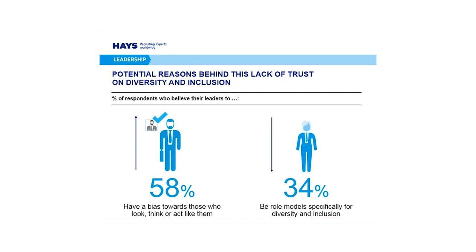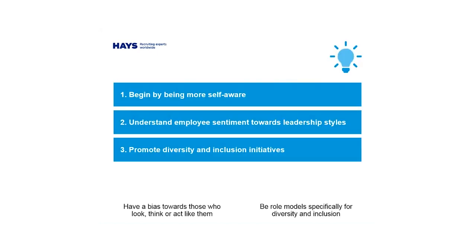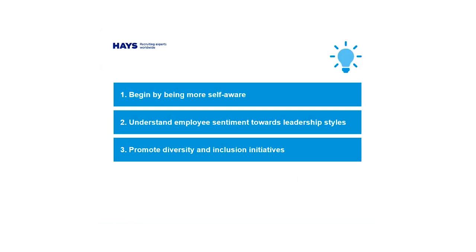Thank you Dan. Turning now to the recommendations for this first element — in order to address this trust gap, leaders can do a few things. First, we recommend they invest time to become more self-aware. A good place to start is to recognize the existence and potential impact of their own unconscious biases so they can mitigate any unintentional consequences on the culture of their organization. There are many training formats to help leaders in this endeavor.